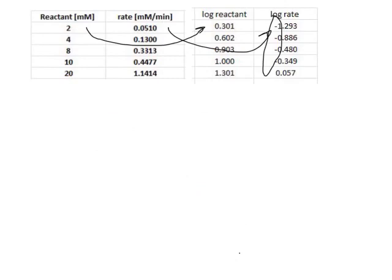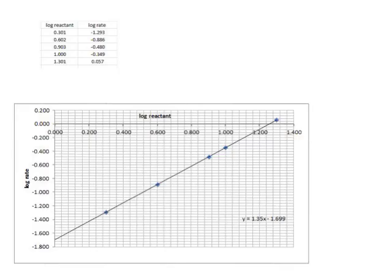So what we can do now with these log data is we can plot our log data. Here the log reactant we plot on the x-axis, and the log of the rate we plot on the y-axis and we get a perfectly straight line. So this means that our reaction maintains the same rate order, which is not necessarily always the case.